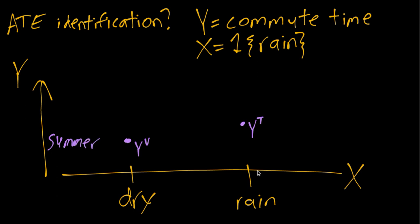We could imagine other days maybe it's slightly lower or slightly higher, but something in that general qualitative pattern. We'll note that YT minus YU is greater than zero. In other words, the true treatment effect or causal effect of rain on commute time is positive. If it's raining it takes longer to drive to work, which makes sense.